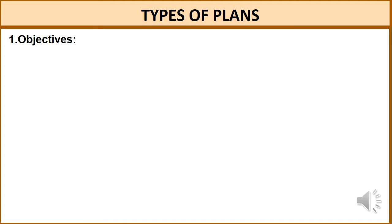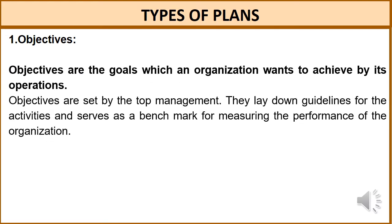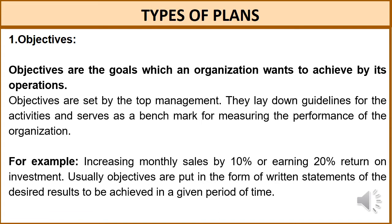The first type of plan is objectives. Objectives are the goals which an organization wants to achieve by its operations. Objectives are set by the top-level management. They lay down the guidelines for activities and serve as a benchmark for measuring the performance of the organization. For example, increasing monthly sales by 10% or earning a 20% return on investment.